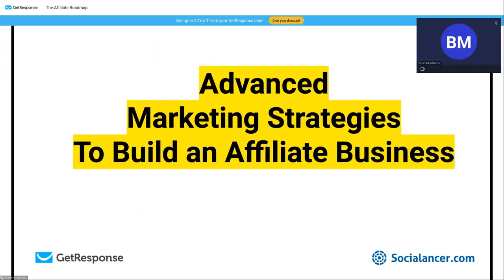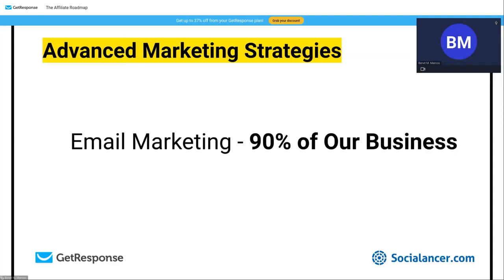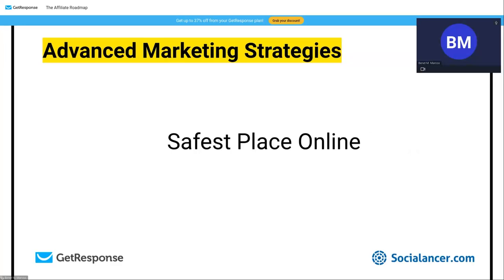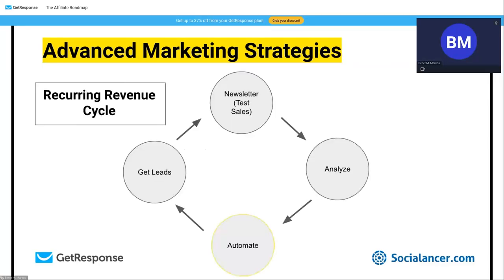Email marketing works — period. You're not reliant on algorithms, and the database is yours. Ninety percent of our business is based on email marketing — it's the safest place online. Here's how we do the recurring revenue cycle: first we get leads, then we send a newsletter to test an offer, then we analyze what's happening, and then we automate the system. These four steps — get leads, newsletter, analyze, automate — are super important.